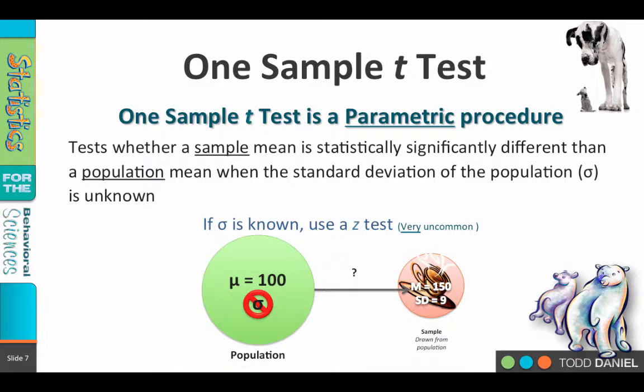The one sample t-test tests whether a sample mean is statistically significantly different than a population mean when the standard deviation of the population, or sigma, is unknown.